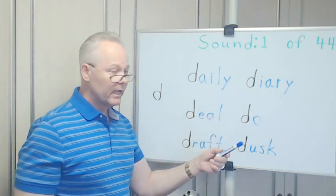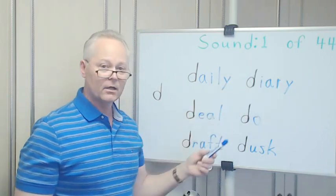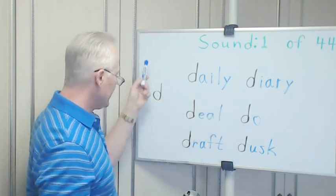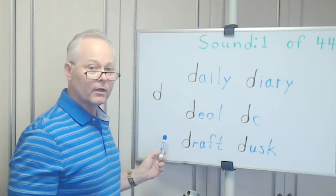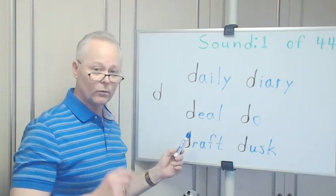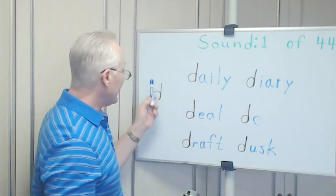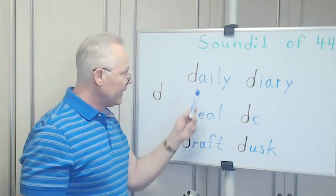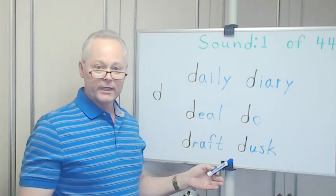As we progress, as we go through all of these sounds, you're going to see some of the sounds have many different letters or letter combinations—maybe eight different ones, maybe two, maybe one—and the sound is the same. That's what we're looking at. You'll have example words for each sound.